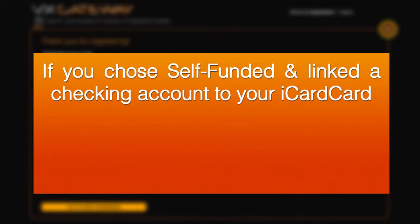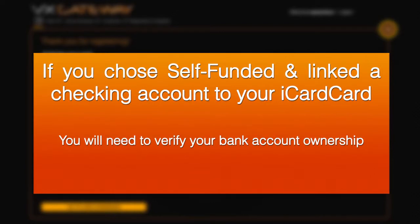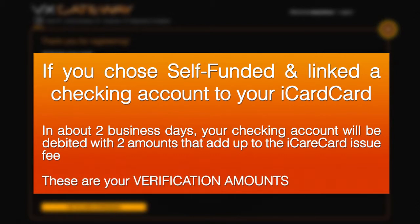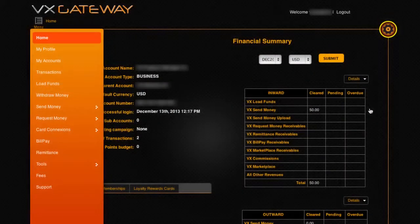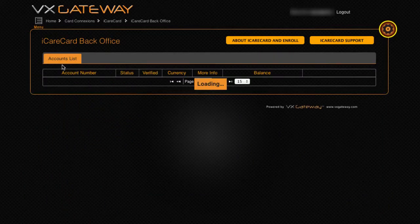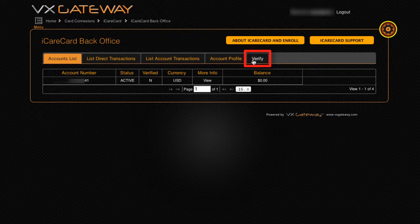If you chose self-funded and linked a checking account to your iCare Card, then you will need to verify your bank account ownership. In about two business days, your checking account will be debited with two amounts that add up to the iCare Card issue fee. These are your verification amounts. When you have these two amounts, return to VX Gateway and go to Menu, Card Connections, iCare Card, Back Office, Verify.